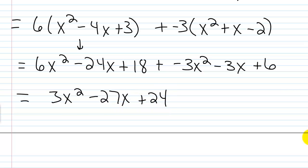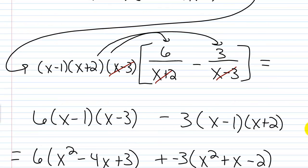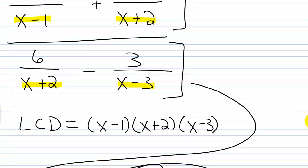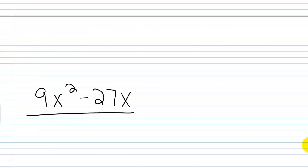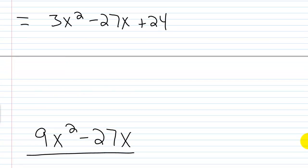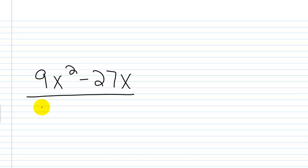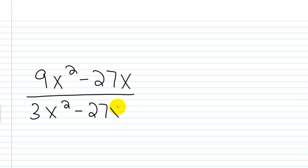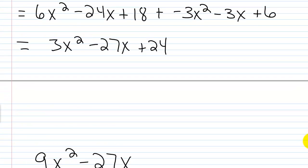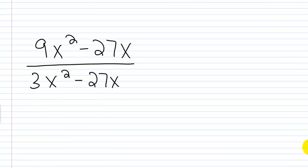So the denominator is 3x squared minus 27x plus 24.